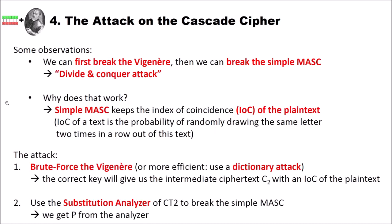Now let's look at an actual attack on the cascade cipher. First, a few observations. We can first break the Vigenère and then break the MASC — this is possible using a divide-and-conquer attack. Why does this work? It works because the simple monoalphabetic substitution cipher keeps the so-called index of coincidence, or IOC, of the plaintext. We already had a video about the IOC on this channel.